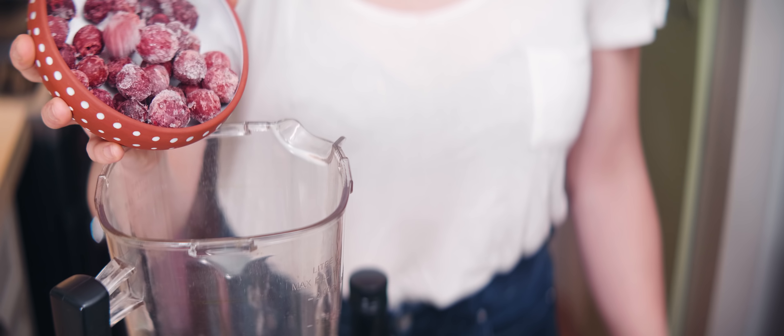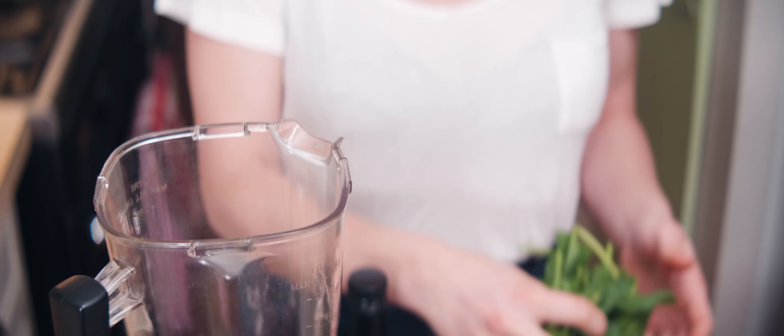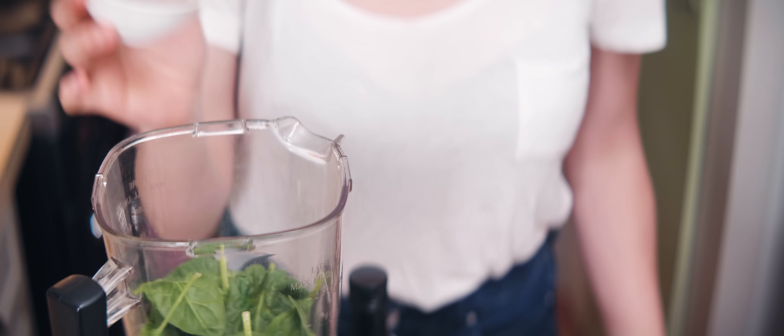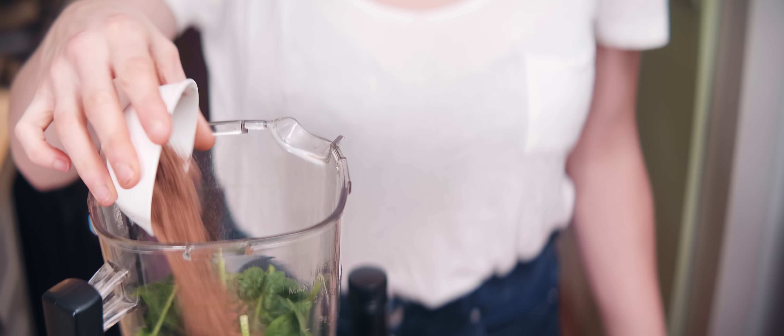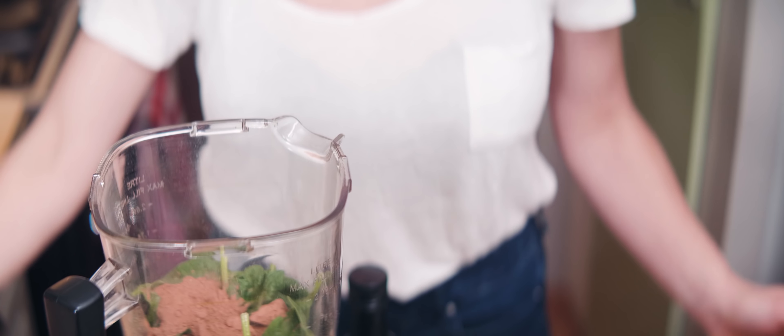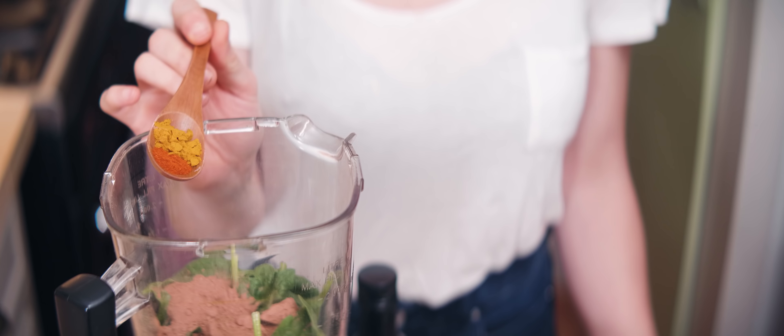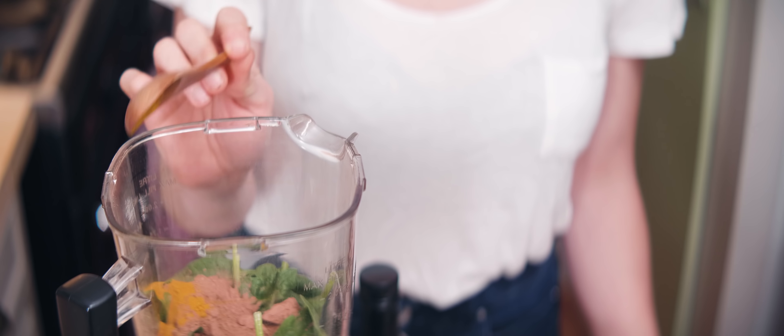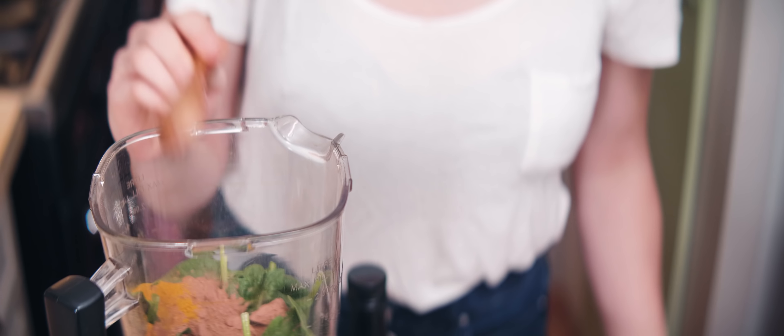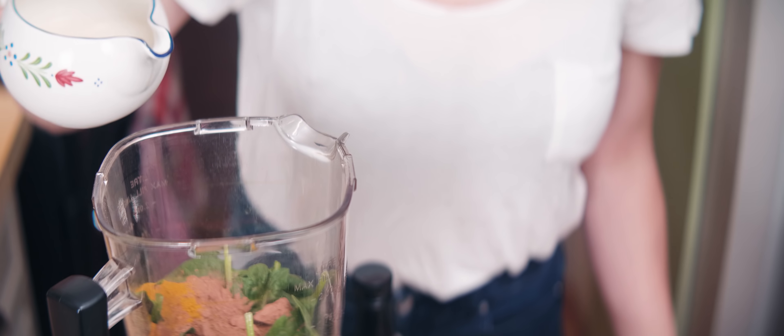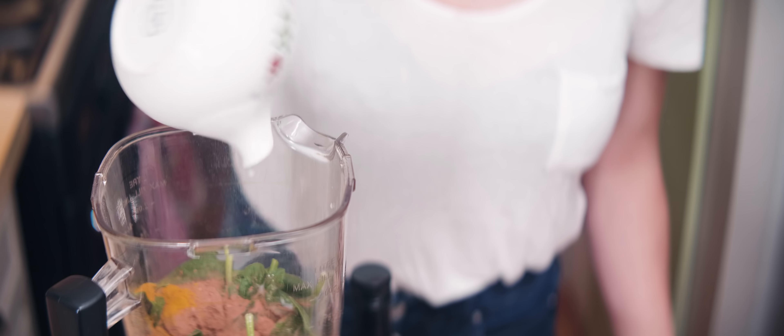To my blender I'm adding one cup of frozen cherries, a handful of spinach, two tablespoons of raw cacao powder, a quarter teaspoon of cayenne pepper and a teaspoon of turmeric, a tiny bit of vanilla powder, some plant milk—one cup, I'm using oat milk.